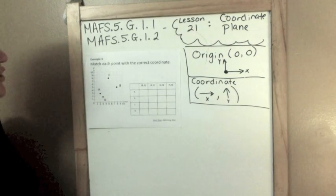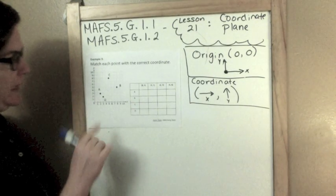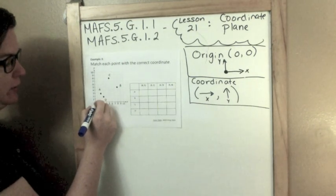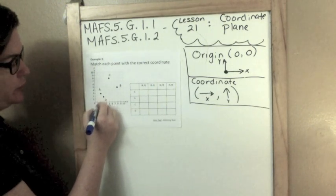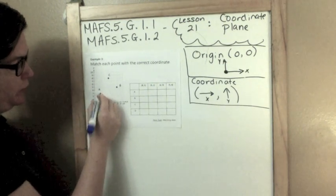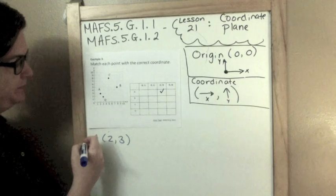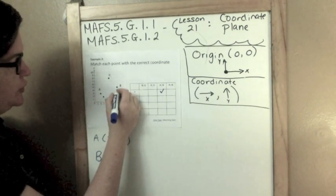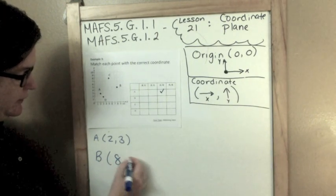Example three. Match each point with the correct coordinate. So point A, we've got A, B, C, and D, and then we've got some coordinates up there. So point A, first we start how many we go over. So to get to point A, we went over two, over two, and then up one, two, three. So A, we need two comma three, that's right there. For B, we went over eight, and then up to five. So eight, five.